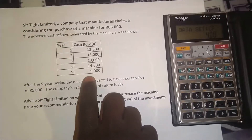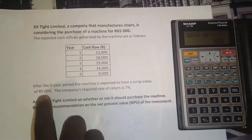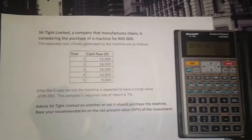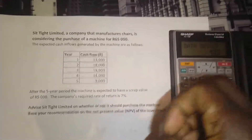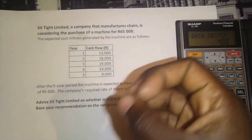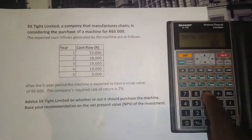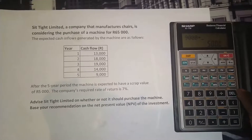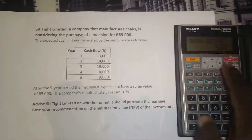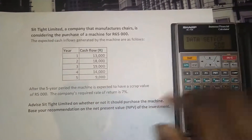At year five, we have a cash inflow of 9,000 Rand. But we're also told there's a scrap value of 5,000 Rand at year five. Whenever you have a scrap value at the end of your cash flow period, you add it as a positive, because that's how much you can salvage from the machine. So we take 9,000 plus 5,000, which equals 14,000, and press enter to register all our cash flows.